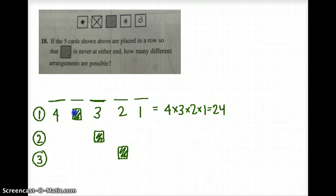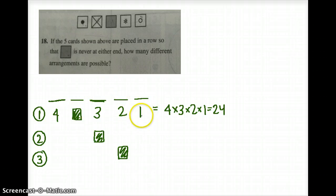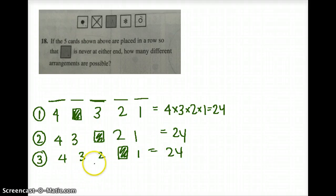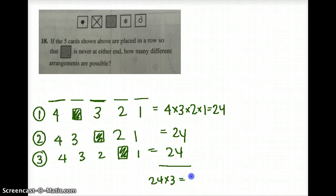So when we have the colored-in square at the second position, we have 24 options — 24 different ways to arrange the other cards. The same is true for option two and option three: each gives us 24 arrangements. So in total we have 24 plus 24 plus 24, or 24 times 3, which equals 72. The answer is 72 options.